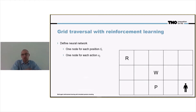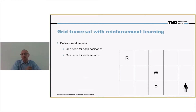In this case, that would be 14 positions, because the wall is not a position that you can attain. And each action is also given a node. In this case, that would be four actions: up, down, left, and right.